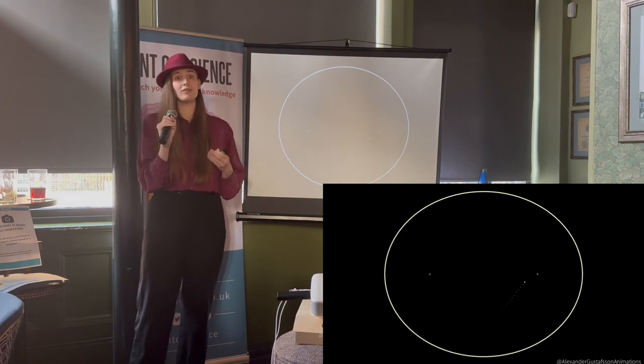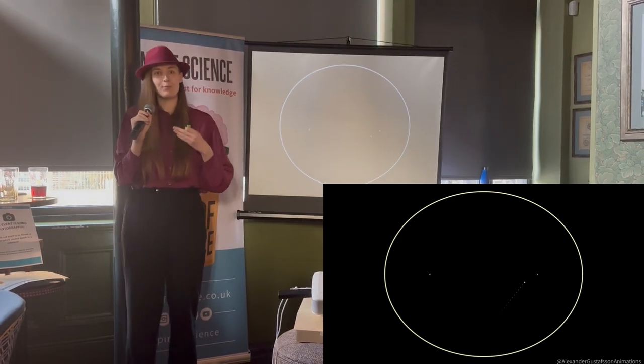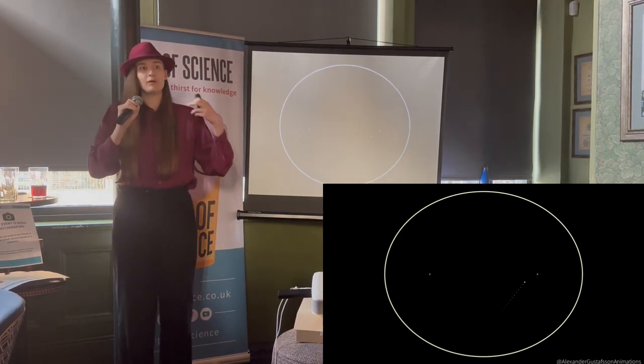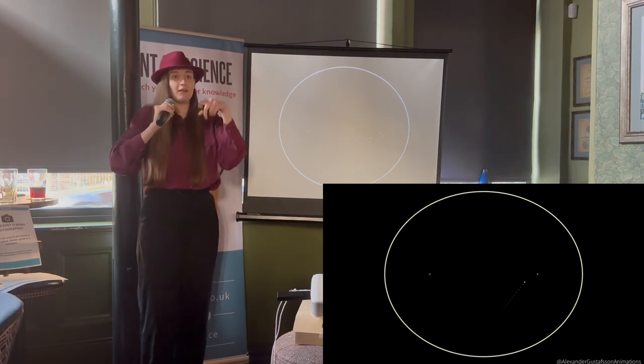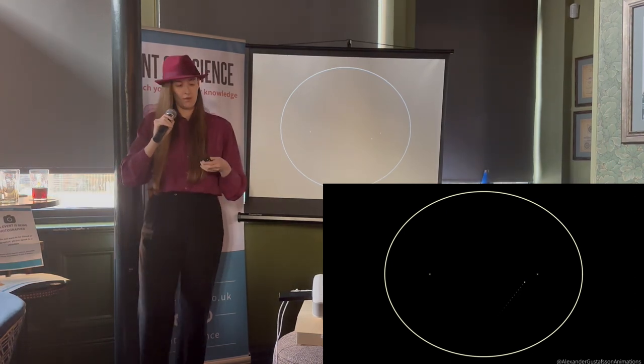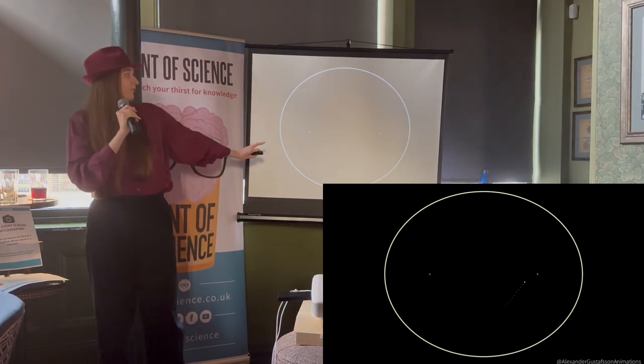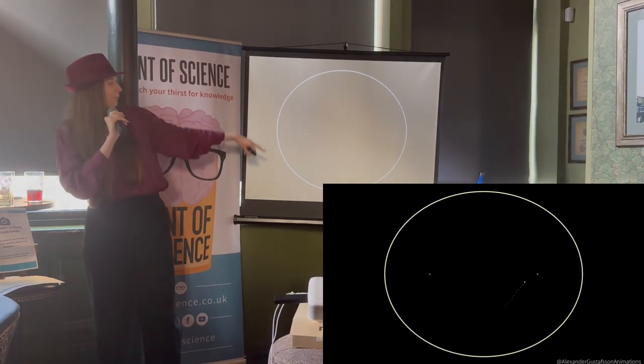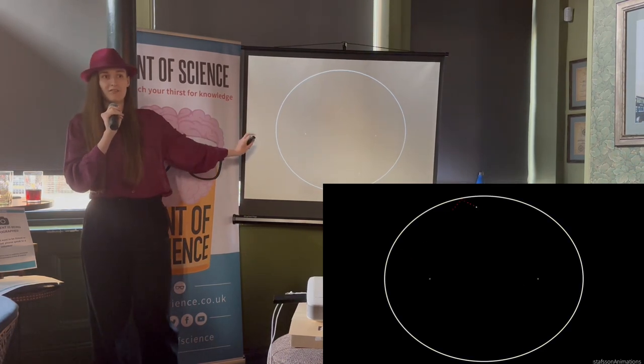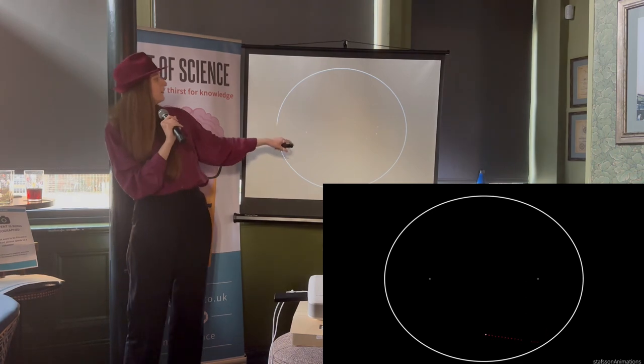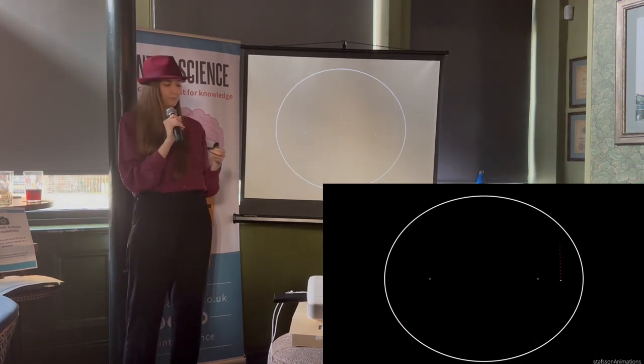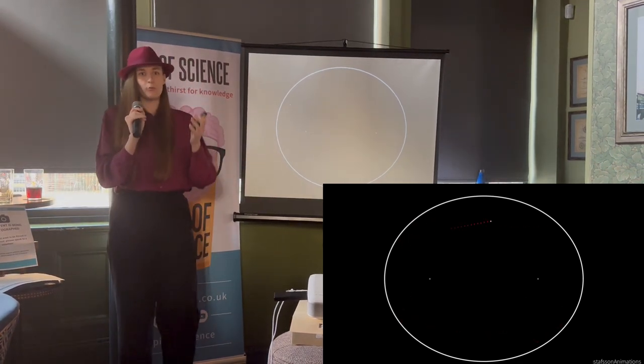So classical billiards is exactly that. It's the billiards we expect. A ball bounces around the table, hits the side and reflects back and then you just have a motion of the ball moving. This isn't the best video because the ball is quite hard to see. But that's the kind of billiard we're expecting, just the ball bouncing around.